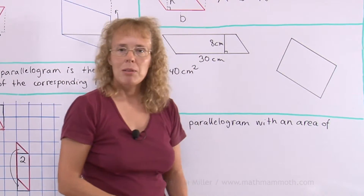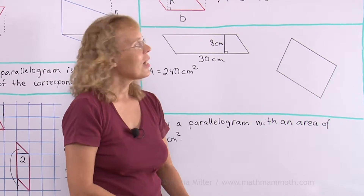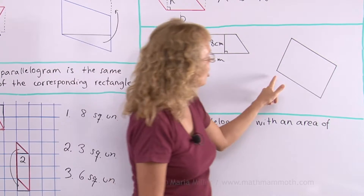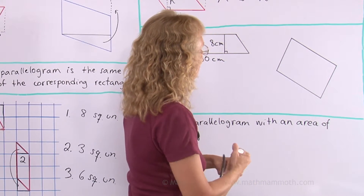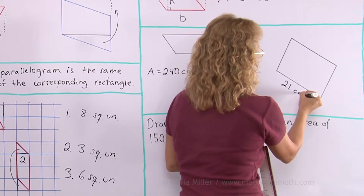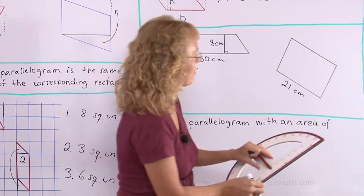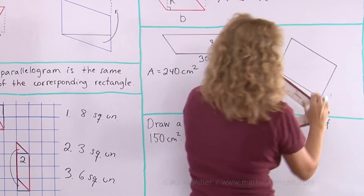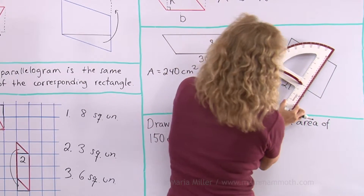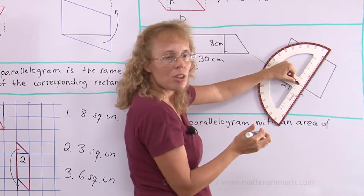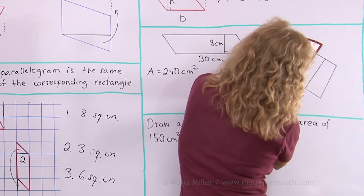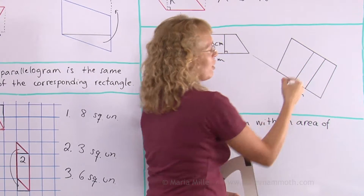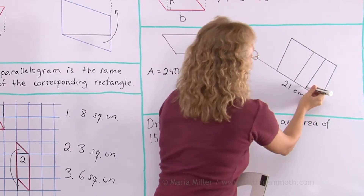In this parallelogram it's a little bit more complicated maybe because it looks like it's tilted on its side. Which side is the base? You can choose any side to be the base. I'll choose this side — measuring it: 21 centimeters. Now I need to draw the altitude. I'll continue the base so I can line up the 90-degree mark. Notice that I can draw the altitude anywhere within the parallelogram — it won't matter where I draw it as long as it is perpendicular, because it's going to be equally long.